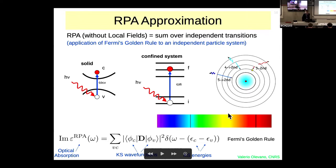Regarding the name 'random phase approximation': this has purely historical reasons, originating in a different domain (likely the study of electrolytes), and the name was carried over because the expression is the same across many fields. It does not correspond to any well-defined 'random' quantity in the present context.